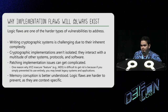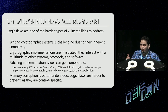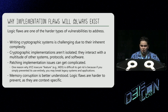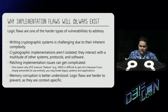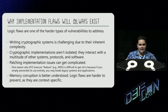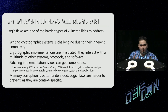Writing cryptographic systems is challenging due to their inherent complexity. Cryptographic implementations aren't isolated — they interact with a multitude of other systems, protocols, and software. Patching implementation issues can get complicated as well. For example, one reason why an insecure feature like MD5 is difficult to get rid of is because if you simply prevented its use entirely, you may break legacy systems and applications. Memory corruption is better understood, but logic flaws are much harder to prevent as they are context specific.